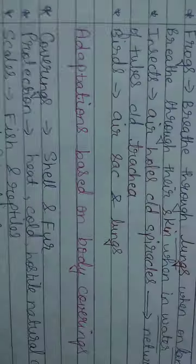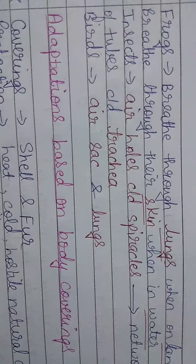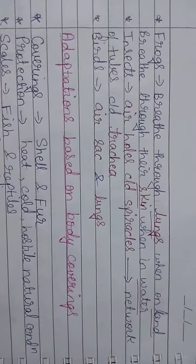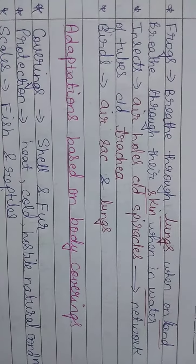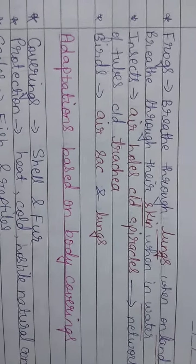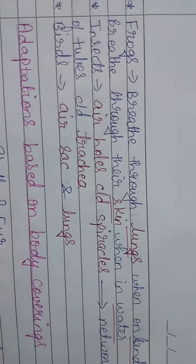Insects have air holes called spiracles, which form a network of tubes. These air holes lead to a network of tubes called the trachea, forming a tracheal system. Insects breathe through this tracheal system.